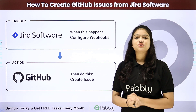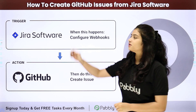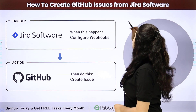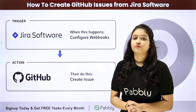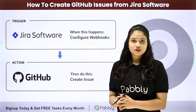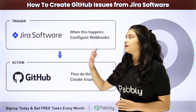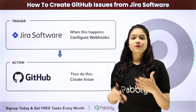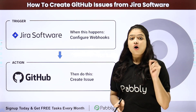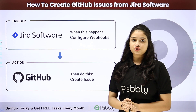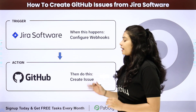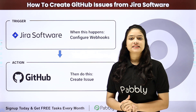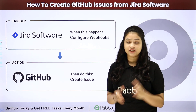Hello everyone. In this video we are going to learn how to create GitHub issues from Jira software. I want that whenever a new issue is created in my Jira software, automatically when the response is received through webhook, a new issue should be created in my GitHub. So how are we going to do this process effortlessly and automatically?